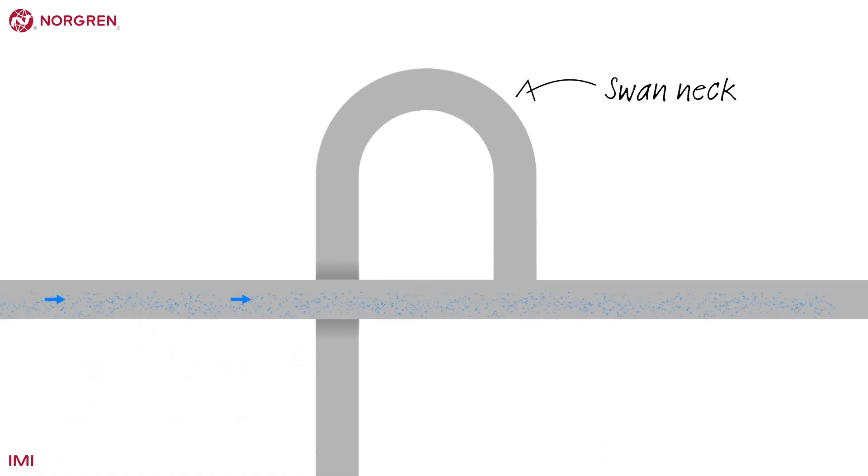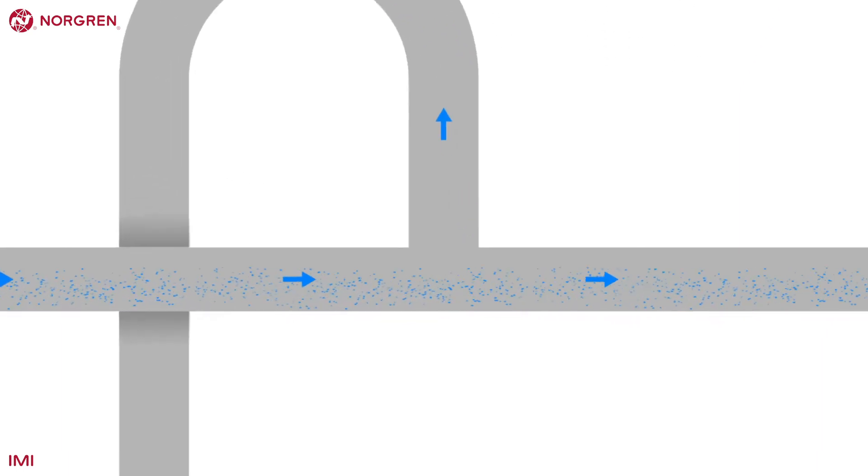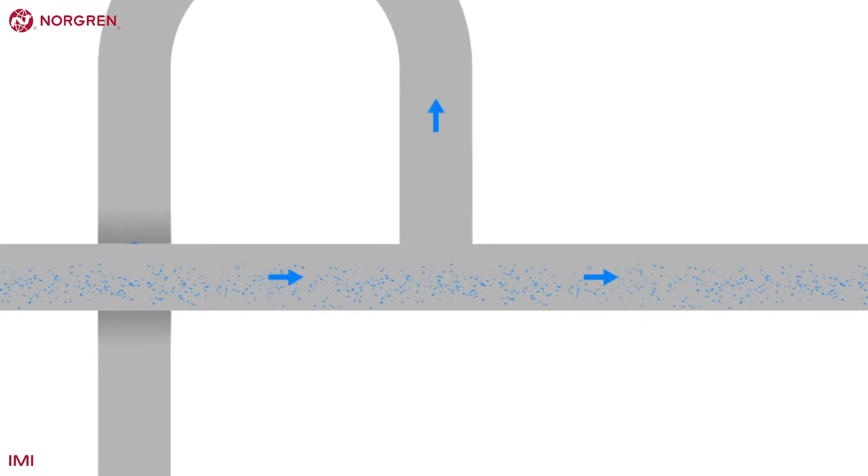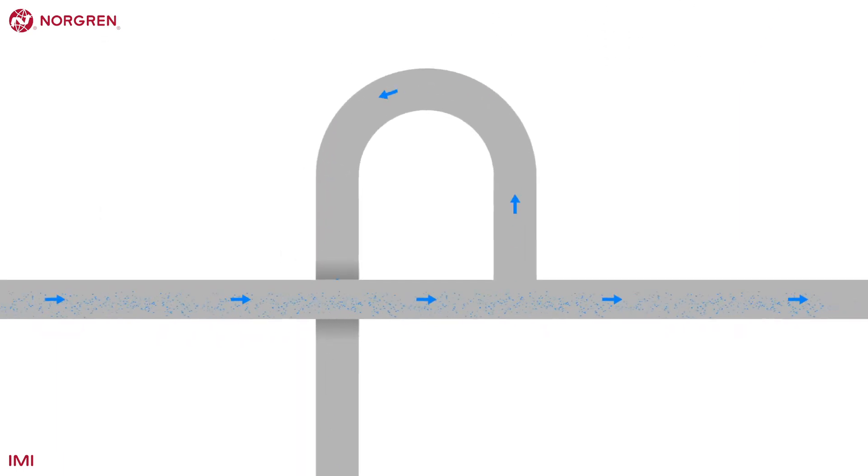Notice the swan neck that comes from the top of the ring main. Taking air from the top will inhibit any fluid entering the downpipe and the swan neck provides the smoothest route for the air. Hard angles or elbows will slow airflow.